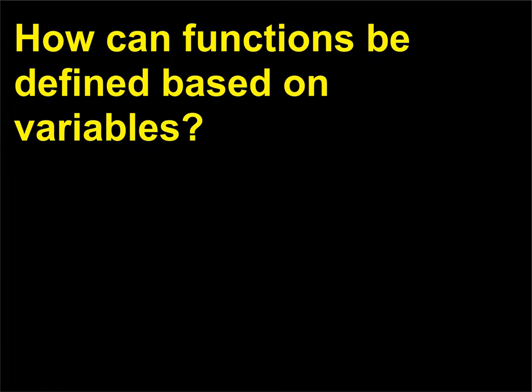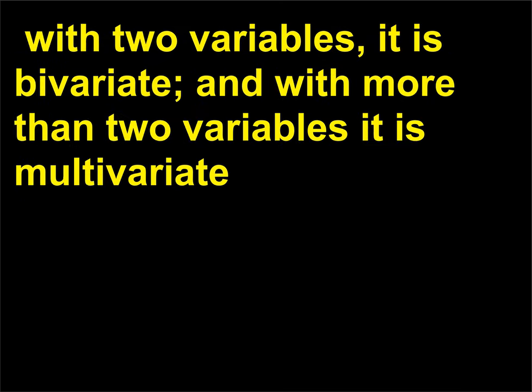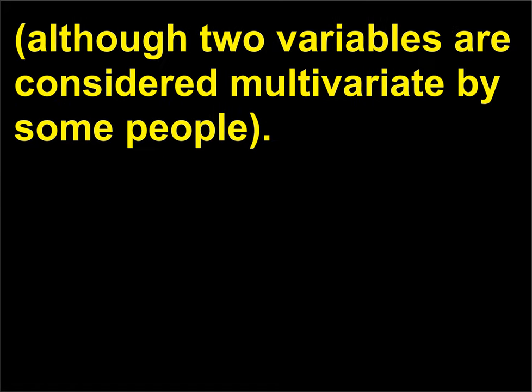How can functions be defined based on variables? A function having a single variable is said to be univariate. With two variables, it is bivariate, and with more than two variables it is multivariate, although two variables are considered multivariate by some people.